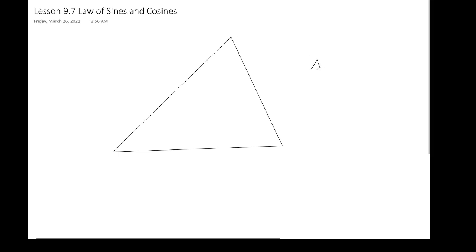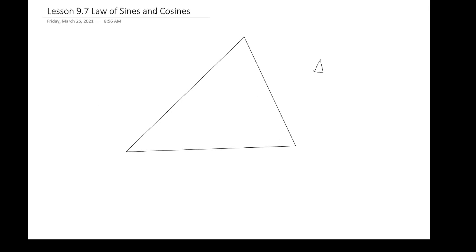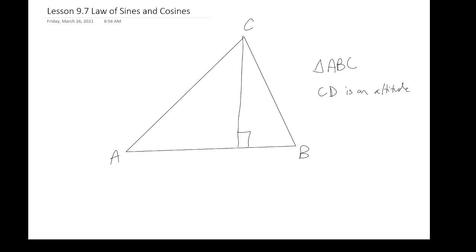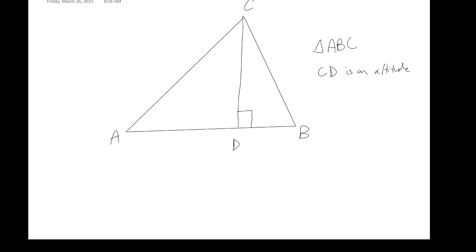What we haven't done yet is handle just any triangle and see if the same thing is going to follow suit. There is a different theorem we're going to use, and today this is our proof for why this theorem works. It's always important to know that the why is just as important as the what. You will not be asked to perform this proof again, but it's going to enrich your understanding as to why we can utilize this formula when solving for the missing parts of any triangle, not just right triangles.